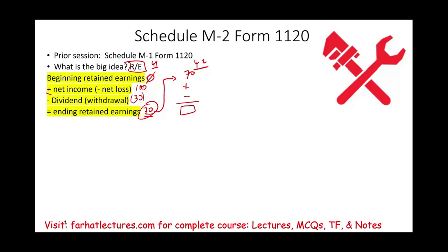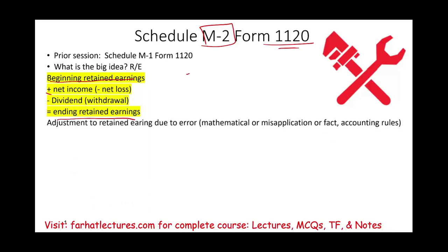So Schedule M-2 is looking for the retained earnings per books. Now, what is the IRS looking for specifically? So why do they want you to publish this M-2 schedule on your Form 1120? Here's what they're looking for specifically. They want to make sure that your beginning retained earnings is matching your ending. Why? Because what they're looking for is any adjustments.